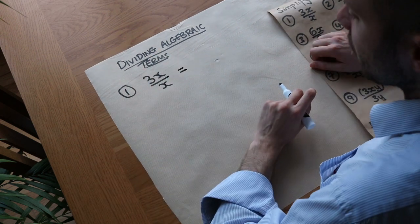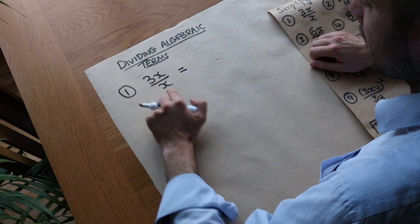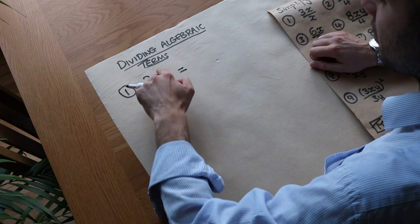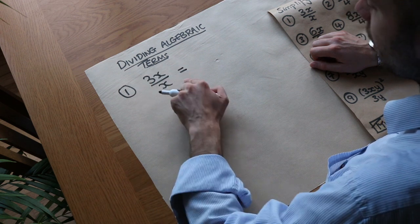And I'm just going to briefly say that all we need to do is that we look at the number terms first, any we have at the top and the bottom and divide those first, and then we look at each variable letter in turn. So we divide the x's, if there's any y's divide those, etc.